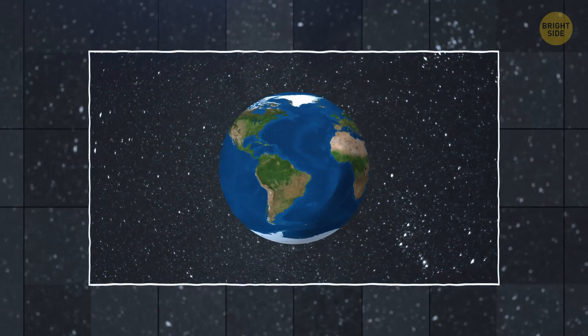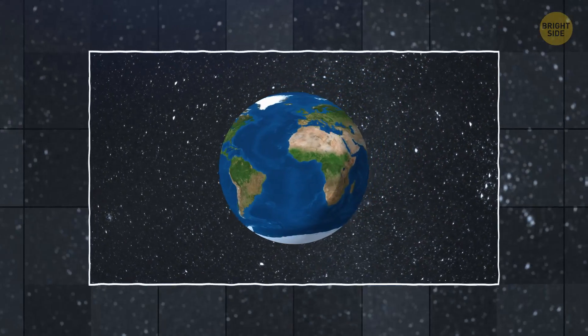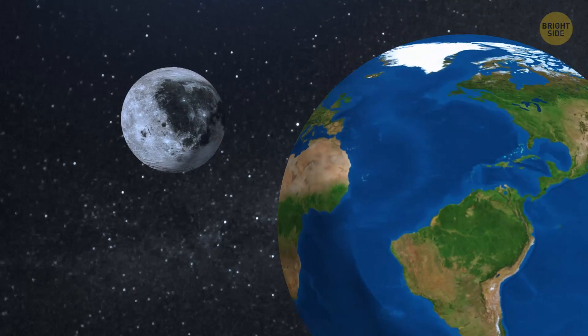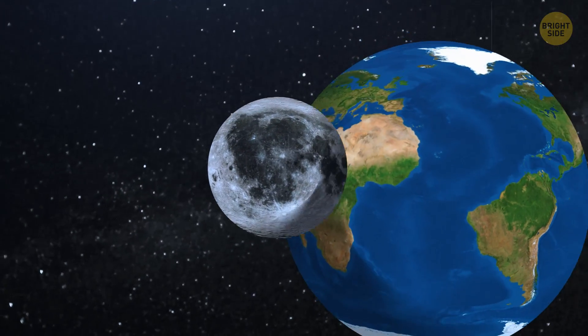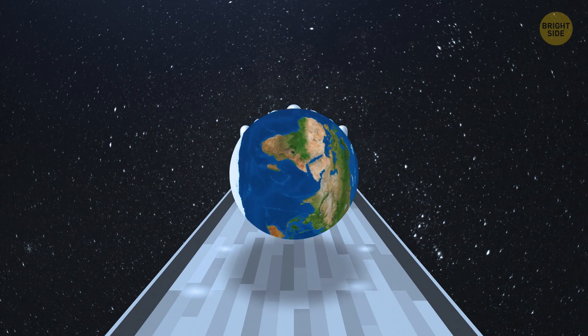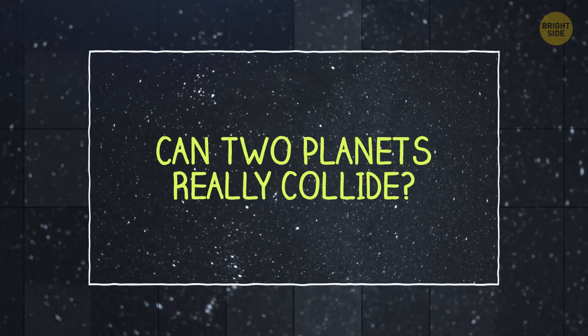At first sight, everything in the universe seems to follow certain rules. Planets circle the stars, and moons circle the planets, right? Well, not always. Sometimes, some of those rocks up there behave like cosmic bowling balls.